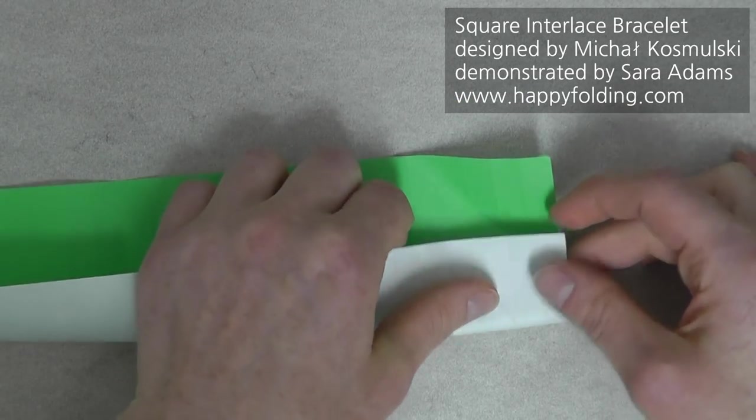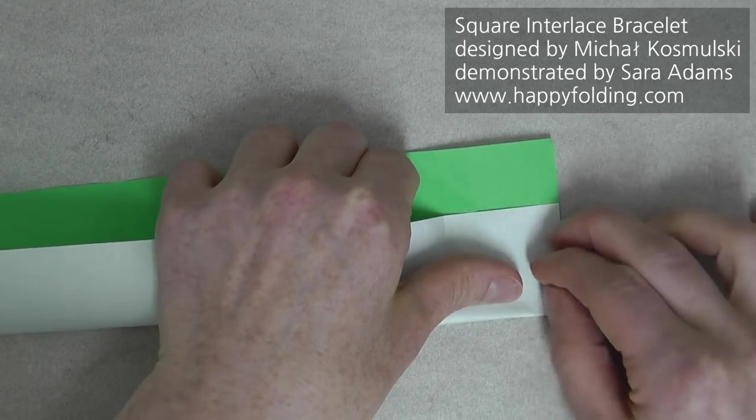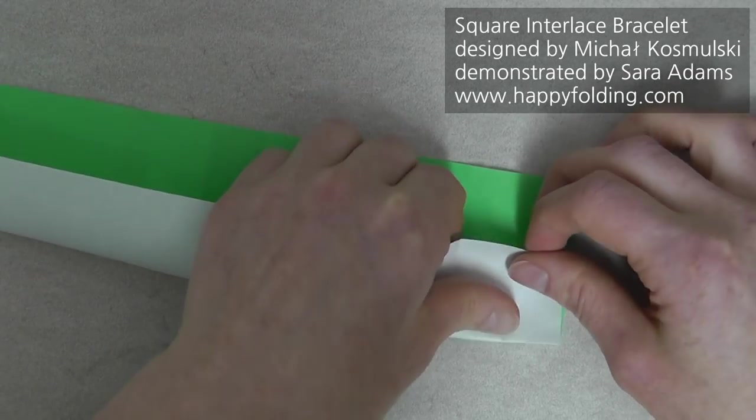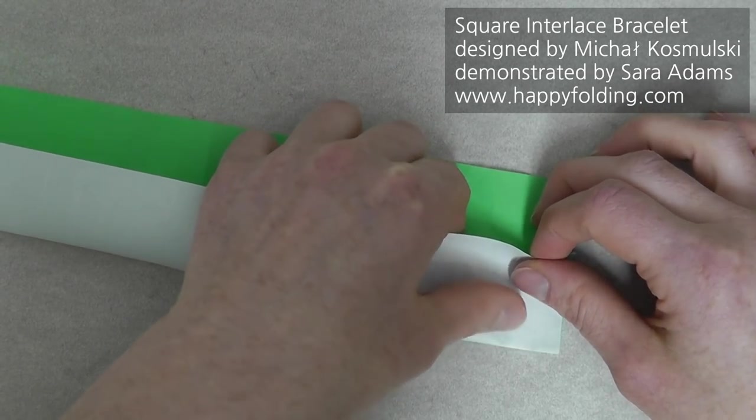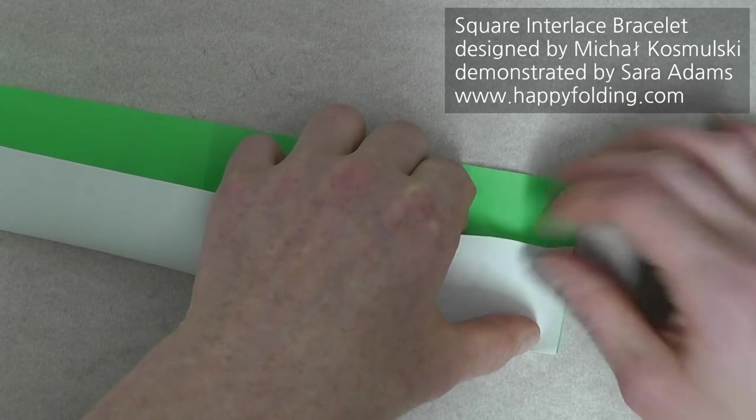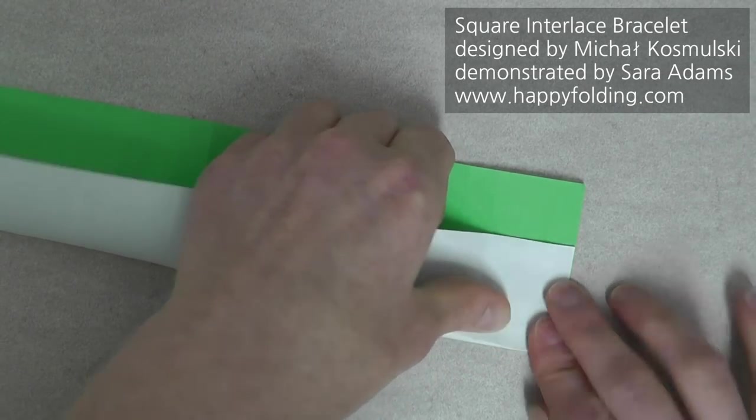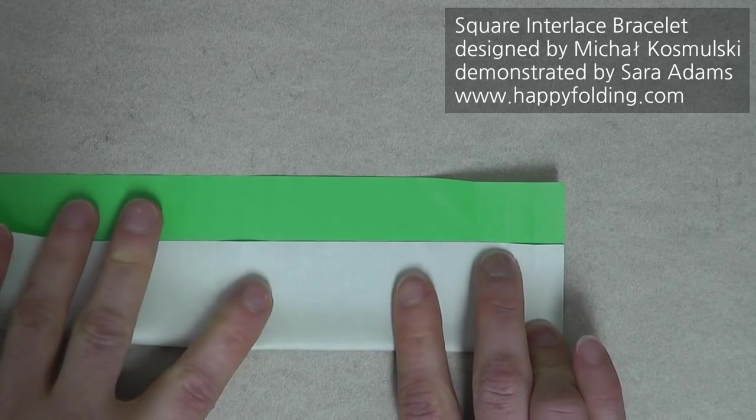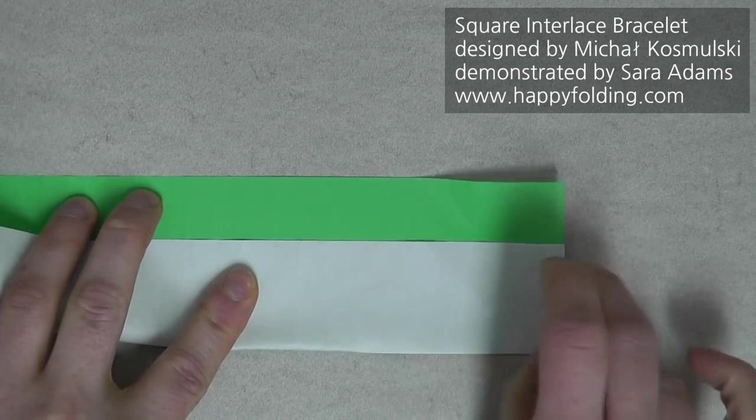So first, take one of the intersections, and then make a pinch there. Be sure that you're happy with the precision. If not, adjust just a little. And then align crease line with crease line